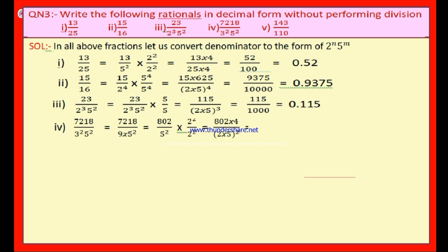Fourth bit: 7,218 by 3 square × 5 square. First divide 7,218 by 9 (which is 3 square): 9 in 72 is 8 times, in 1 is 0 times, in 18 is 2 times — giving 802. So we now have 802 divided by 5 square. Multiply numerator and denominator by 2 square: numerator is 802 × 4 = 3,208; denominator is (5 × 2) square = 100. Since there are 2 zeros, there should be 2 decimal places. Therefore the answer is 32.08.